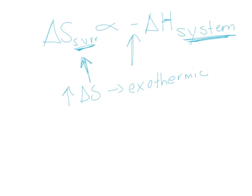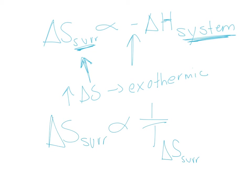If we're talking about enthalpy, we also need to talk about temperature. Temperature is inversely proportional to the delta S of our surroundings, so 1 over T is proportional to the delta S of the surroundings. Combining the two, you end up getting: delta S of our surroundings is equal to the minus delta H of our system divided by temperature.